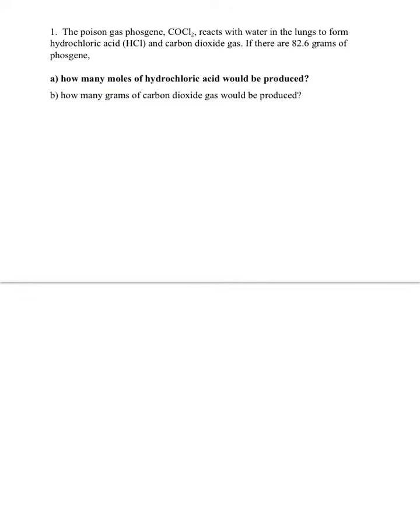In number one of your stoichiometry problem set, we have a poison gas, COCl2, and it reacts with water in the lungs to form hydrochloric acid and carbon dioxide gas. If there are 82.6 grams of this phosgene gas, we are going to find in A how many moles of hydrochloric acid would be produced, and in B how many grams of carbon dioxide gas would be produced. First, we want to start with a balanced chemical equation so that we can get our coefficients to use as a mole ratio. Here's our balanced chemical equation.